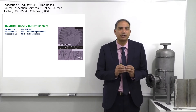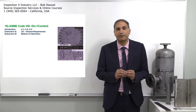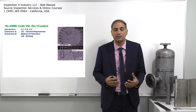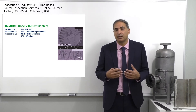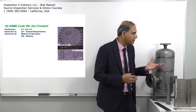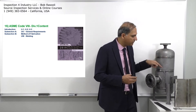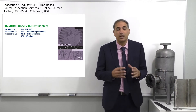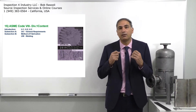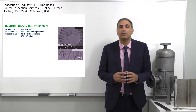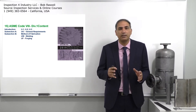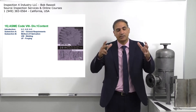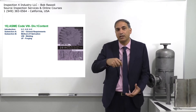Subsection B covers the method of fabrication, and it falls into three categories. The first is UW — for pressure vessels, we manufacture them using welding, with circumferential and longitudinal joints. The second is forging, which is very rarely used, maybe for very high-pressure reactors, where solid bars are drilled to create a pressure vessel.